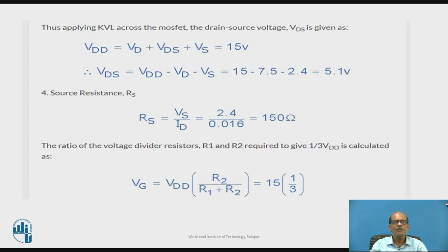Applying KVL across the MOSFET, the drain source voltage VDS is given by: VDD is VD plus VDS plus VS, 15 volt. Therefore VDS, by substituting the values in the equation VDD minus VD minus VS, we will get 5.1 volt. Then source resistance RS is VS by ID, so VS is 2.4 divided by ID is 16 milliampere, so if we solve we get RS equal to 150 ohm.